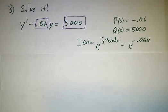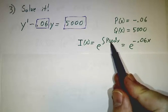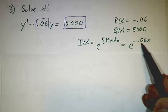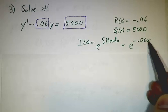And our integrating factor? Well, the integrating factor is always e to the integral of p(x)dx. The integral of minus 0.06 is just minus 0.06x. So that's our integrating factor.